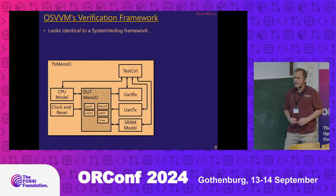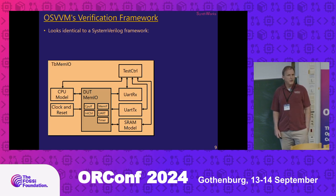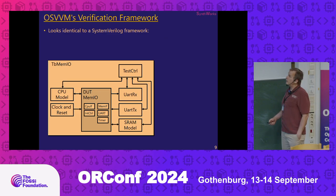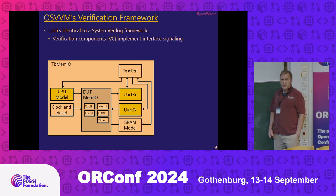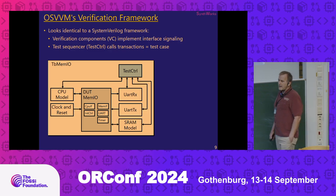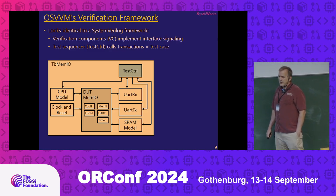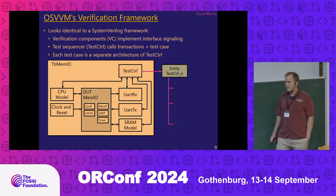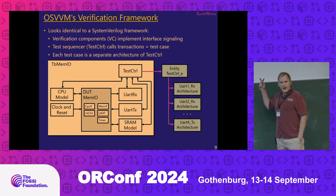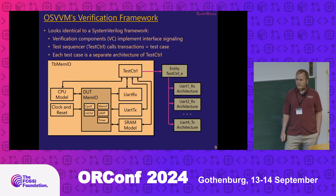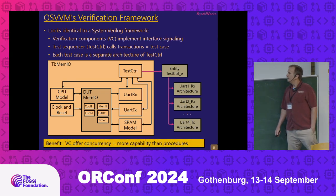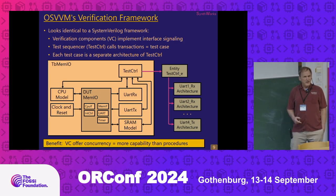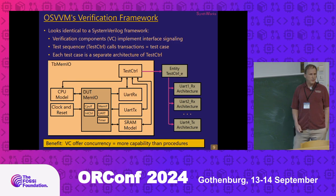If we look at the verification framework, it looks a lot like what SystemVerilog does, or any other framework does. We have verification components that implement the interface signaling, and then we have a test sequencer that calls transactions to implement a test case. In VHDL we have multiple architectures, so we have an architecture for each independent test case. With verification components we get concurrency, and that's a lot better than some of the approaches that just use procedures.